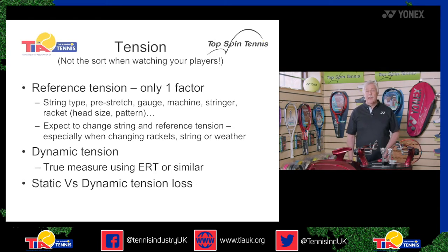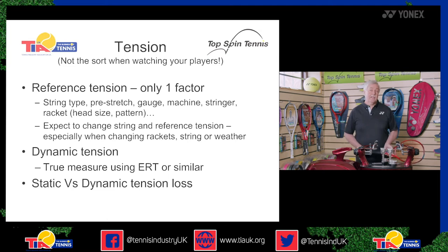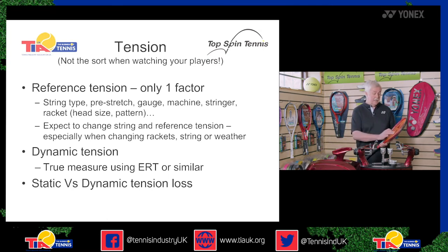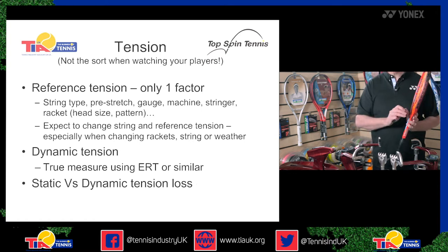Now let's talk about tension — not the feeling when you're watching your players, but the actual tension in the strings. Many people go into a stringer and say they want 58 pounds or 50 pounds. What we call that is the reference tension — how much the machine is pulling the string at each time. But that's only one factor. For each of the different string types, if you pull at the same reference tension, you'll actually get a different tension in the centre of the racket because it stretches differently. The machine used, string construction, the racket, head size, and number of strings and crosses all make a difference.